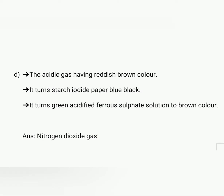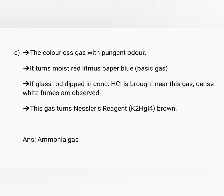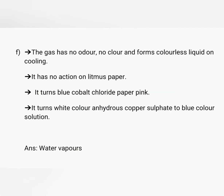The reddish-brown acidic gas is nitrogen dioxide (NO2). The colorless gas with a pungent odor which turns moist red litmus paper blue — i.e., it is a basic gas — and which when it comes in contact with HCl gives dense white fumes. Answer: ammonia gas.